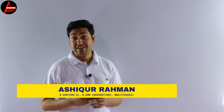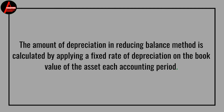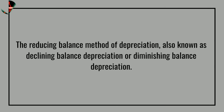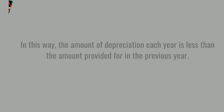When you calculate depreciation using this method you make many mistakes because there will be a different amount of depreciation each period. The reducing balance method is calculated by applying a fixed rate of depreciation on the book value of the asset each accounting period. It is also known as declining balance depreciation or diminishing balance depreciation.